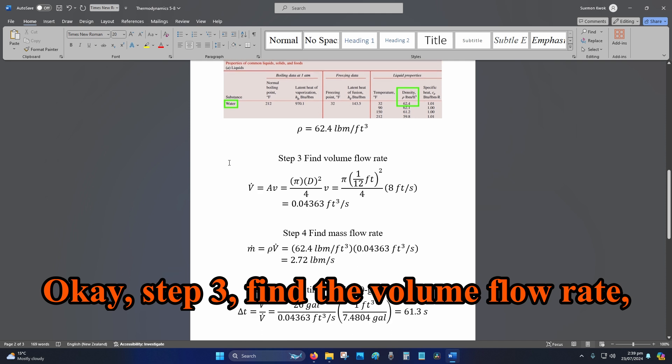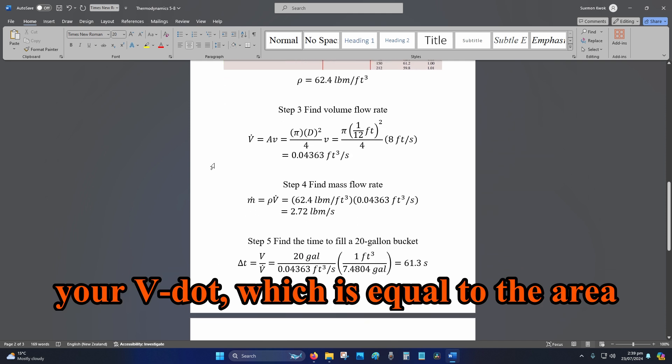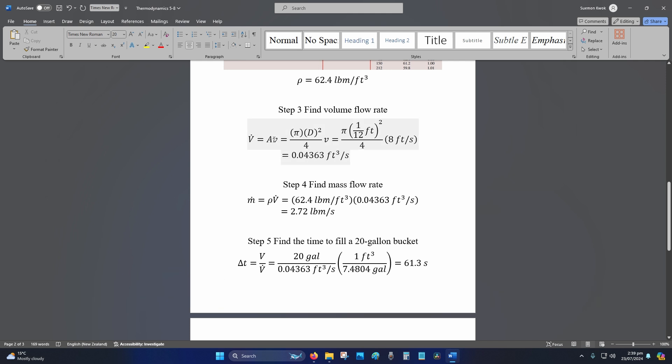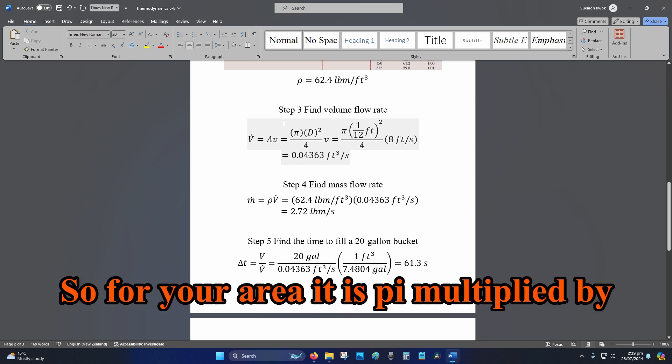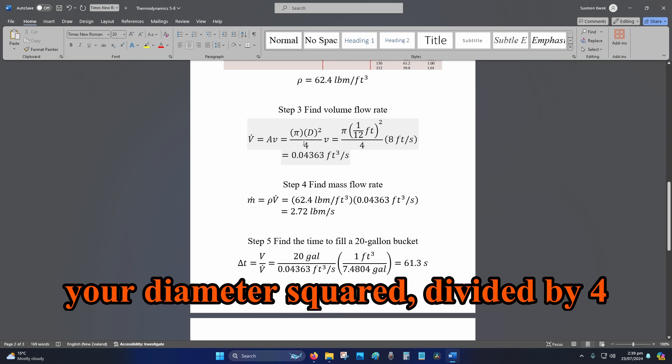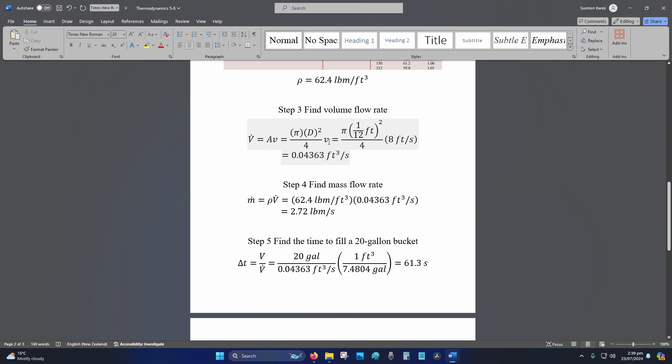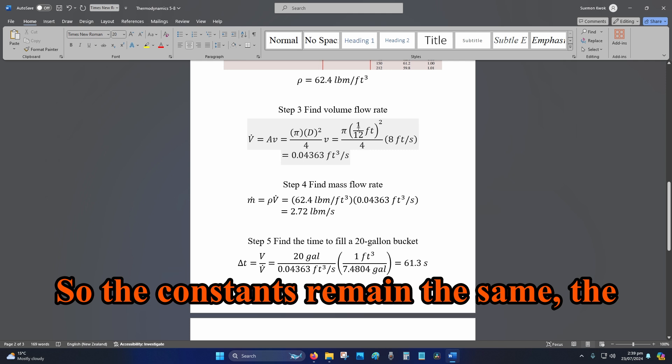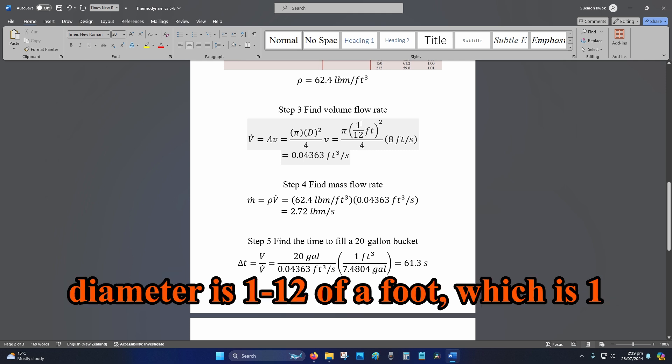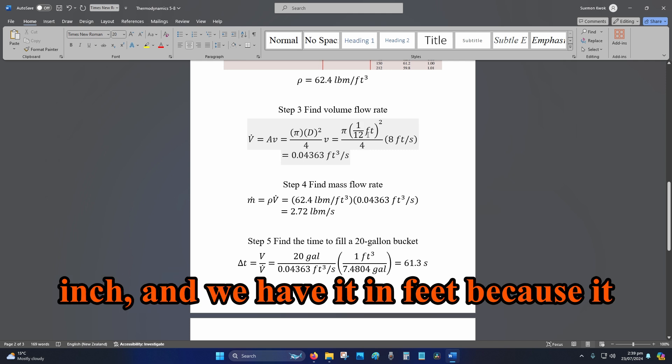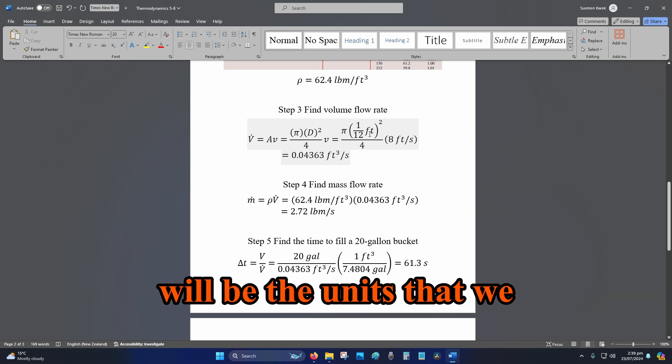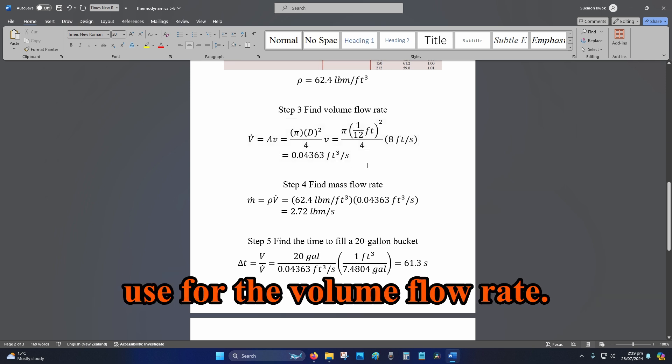Step 3, find the volume flow rate, your V dot, which is equal to the area multiplied by the velocity. So for your area, it is pi multiplied by your diameter squared divided by 4 multiplied by your velocity. So the constants remain the same. The diameter is 1 twelfth of a foot, which is 1 inch, and we have it in feet because it will be the units that we use for the volume flow rate.